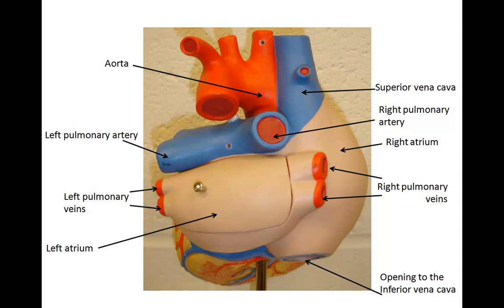Also identified is the opening to the inferior vena cava. You may also see it identified as the posterior vena cava in some diagrams. This blood vessel is a vein through which blood returns back to the heart from below, such as in areas of the trunk and legs. Blood returning in the superior and inferior vena cavae is received by the right atrium.